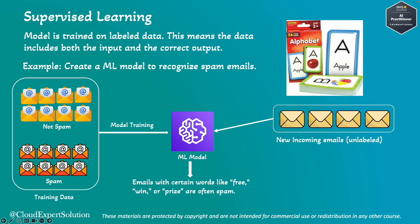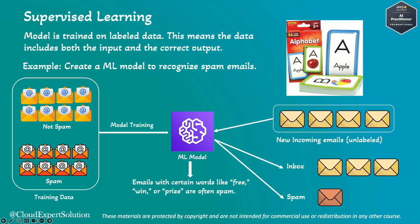Once the model is trained, if we feed new incoming emails which are not labeled, the model will generate predictions or inferences and distinguish the emails which are spam versus which are not spam.